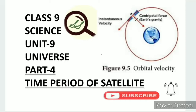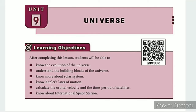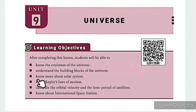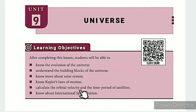Greetings from SS class 9 science unit 9 universe part 4, time period of satellite. The learning objectives are: know the evolution of the universe, understand the building blocks of the universe, know more about the solar system, know Kepler's laws of motion, and calculate the orbital velocity and time period of a satellite.